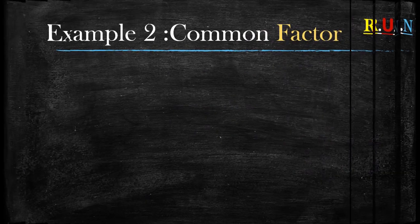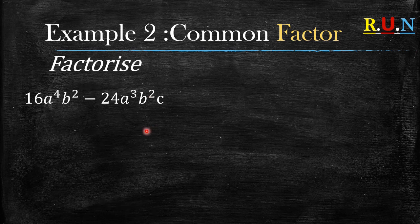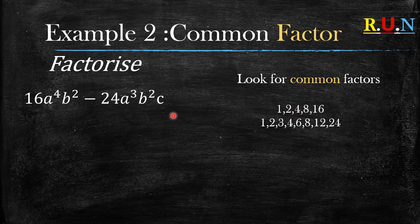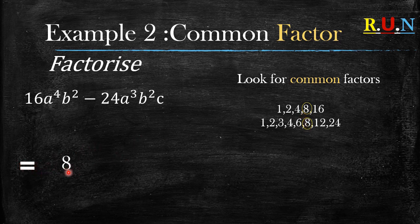Let's look at example number two. So first of all we always look for the common factors. We have 16 and 24. Here are the factors of 16, and here are the factors of 24. In these two lists, which factor is the highest and common? There's a common factor of 1, 2, and 4, but which one is the highest? Eight is the highest.